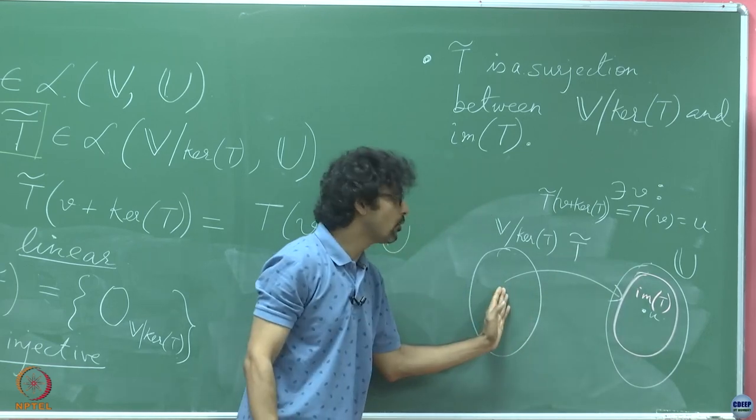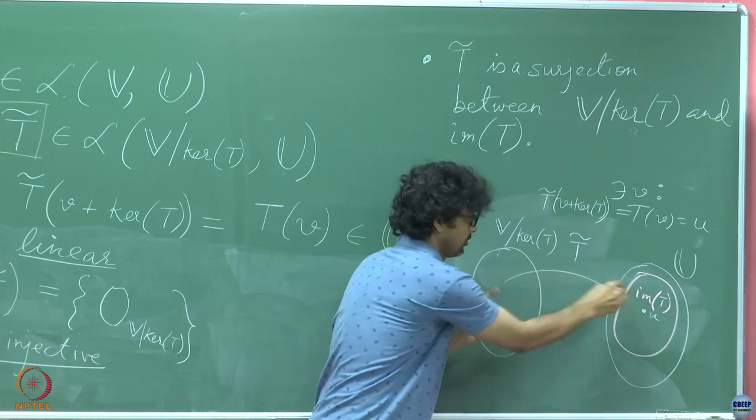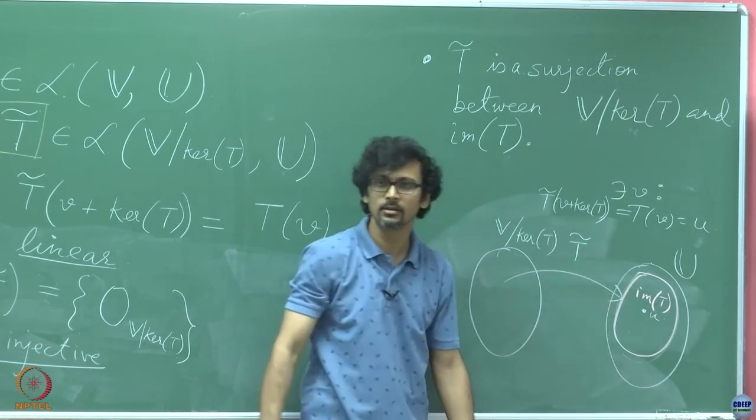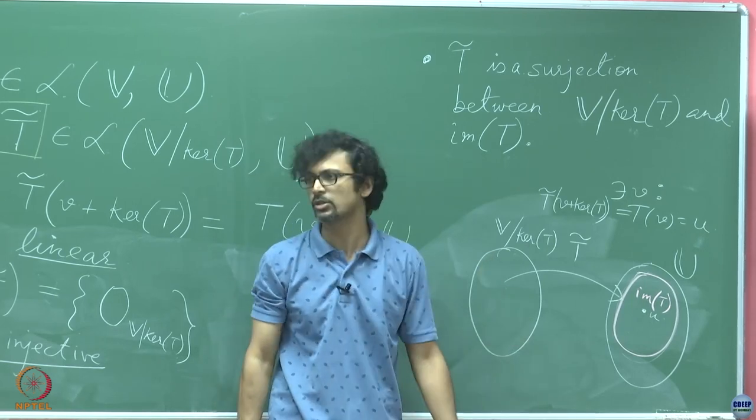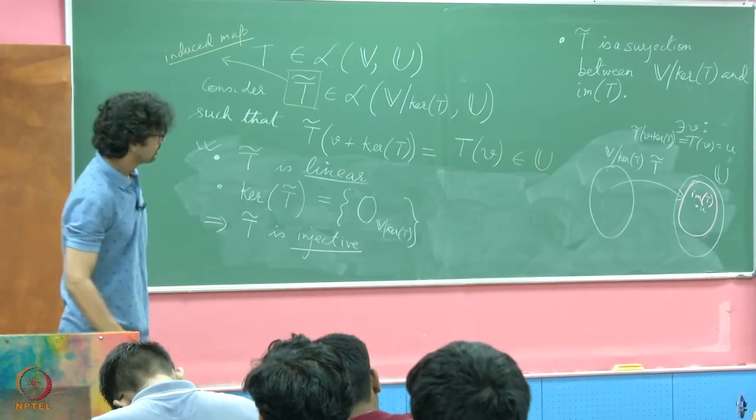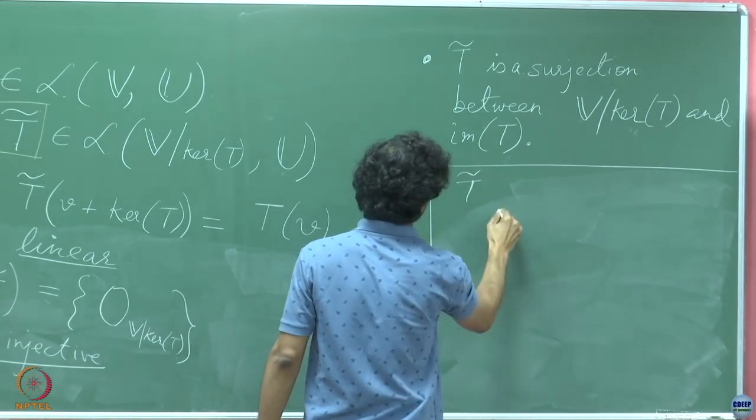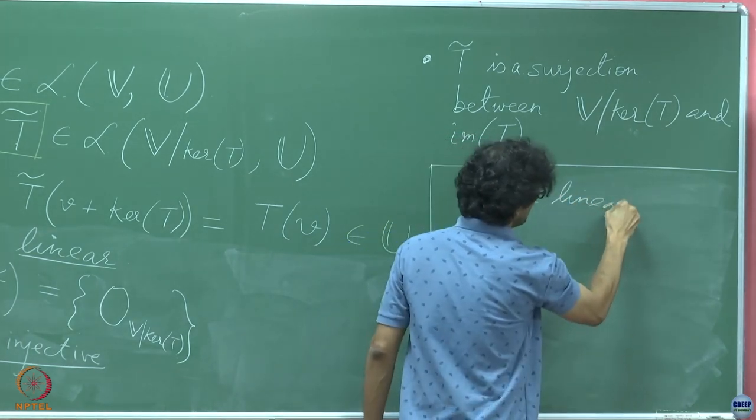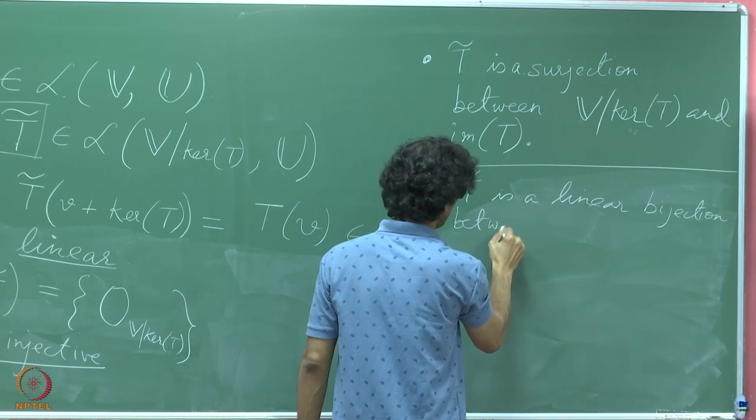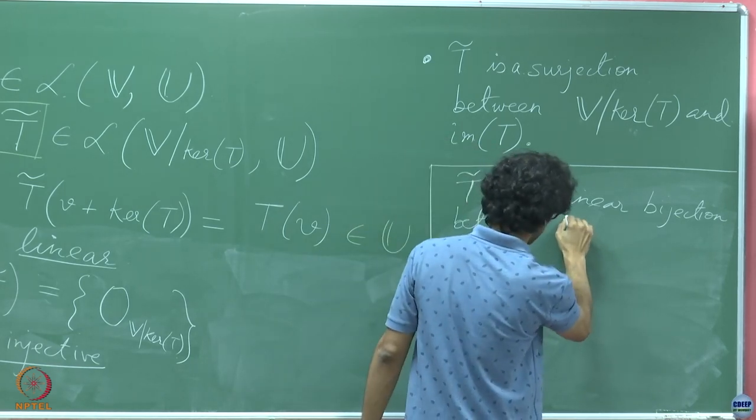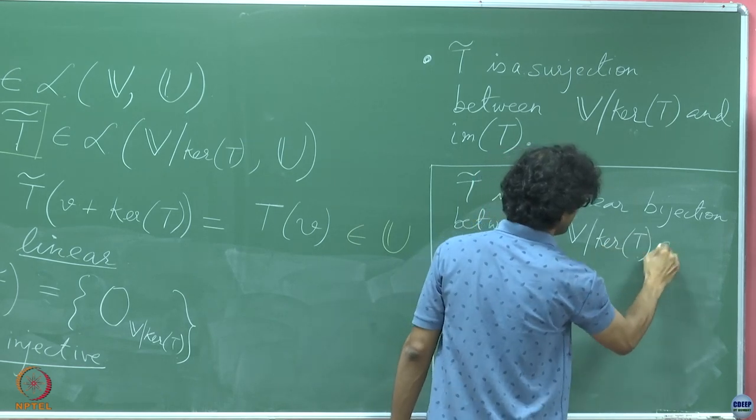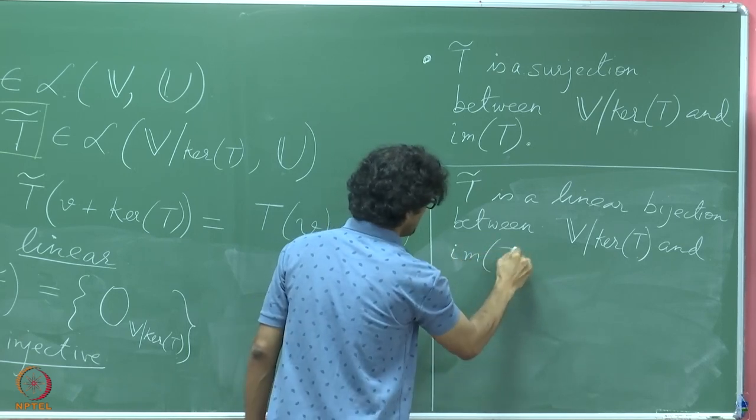So T tilde is a surjection between V quotiented by kernel T and the image of T. And already we have seen before this that T tilde is an injection between this and this. So if it is an injection between V mod kernel T and U, it is also an injection between if you just think of this small aspect and its pre-image, that is also 1 to 1 because the whole map is 1 to 1. So of course the restriction of that is also going to be 1 to 1 or an injection. So what am I going to claim with all of this? If I stitch them together, the final claim is going to be this.